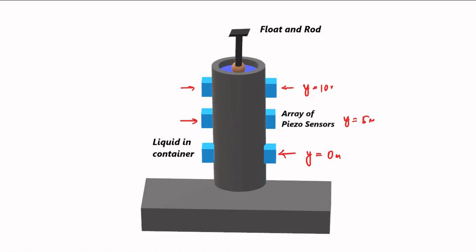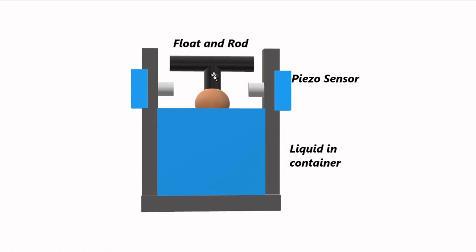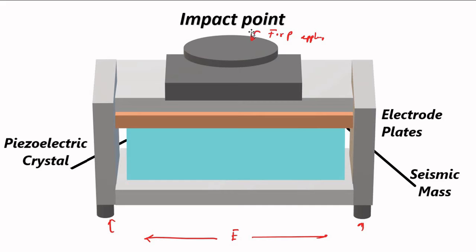This is the basic principle: when the rod goes up and down, it strikes the impact point of the piezo sensor. The entire force is channelized through the seismic mass to the piezoelectric crystal, and when the crystal is stressed, it generates an electric potential as per the piezoelectric effect.